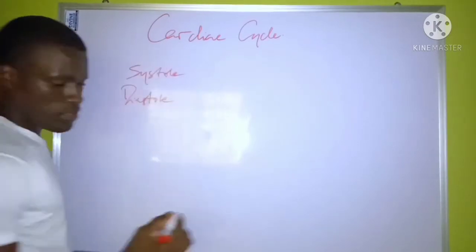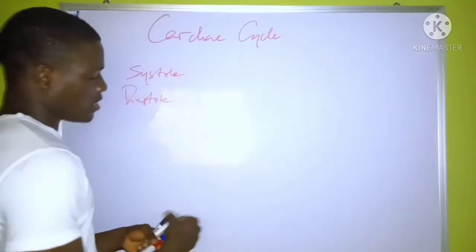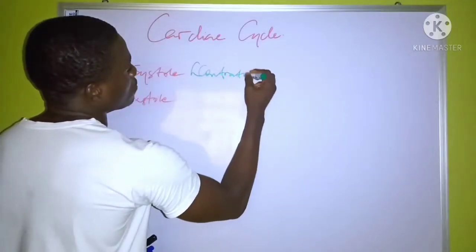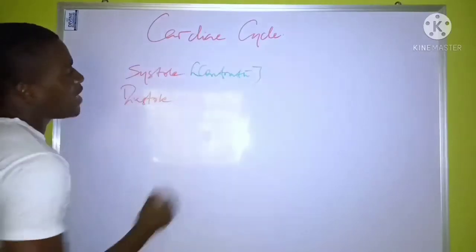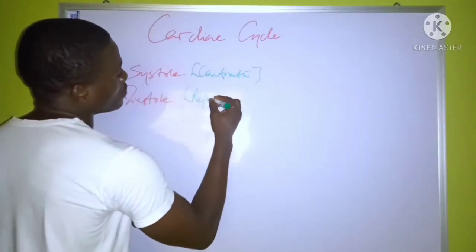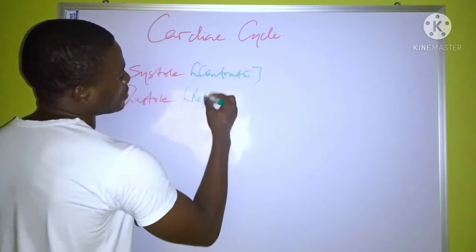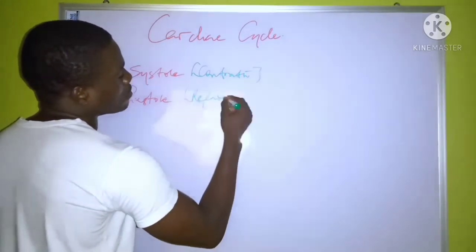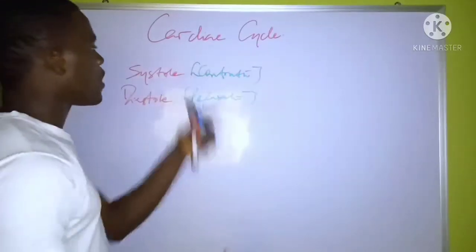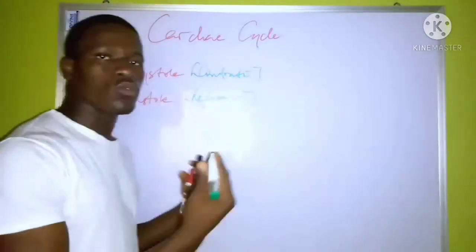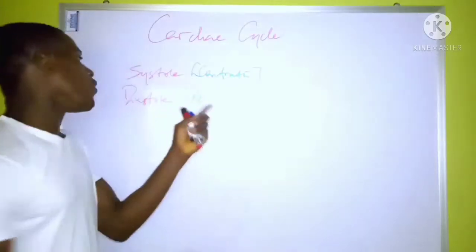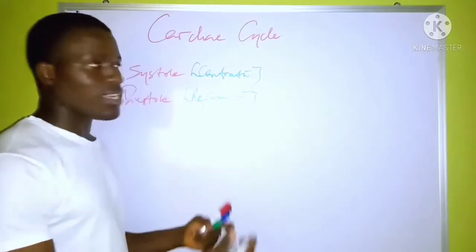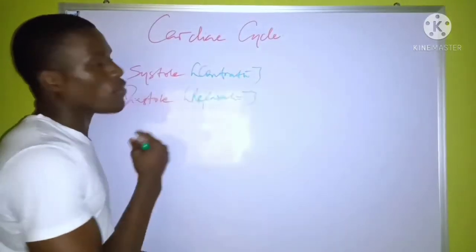Systole represents contraction, while diastole represents repolarization or relaxation. Contraction also refers to the word depolarization, while relaxation also means repolarization — that is relaxation of the heart. The systole is of two types.